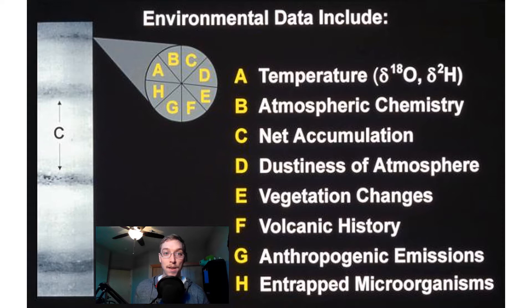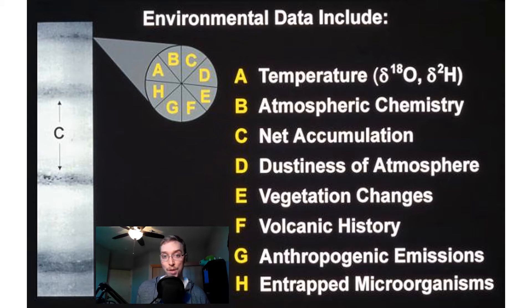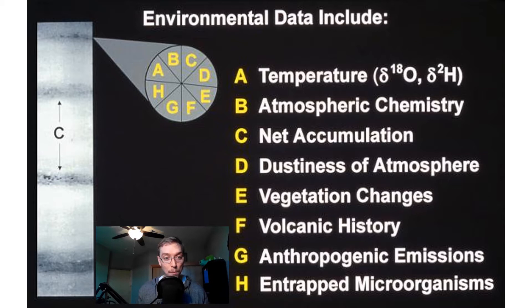Environmental data from ice cores can include temperature — obtained through looking at oxygen-18 or helium-2, different isotope ratios — atmospheric chemistry by analyzing what's in those bubbles, net accumulation of snow and ice, dustiness of the atmosphere indicating how much sediment is being blown about, changes in vegetation, volcanic history. If there's tephra or ash distributed in the atmosphere, it'll be captured in these bubbles. Also anthropogenic emissions and entrapped microorganisms.